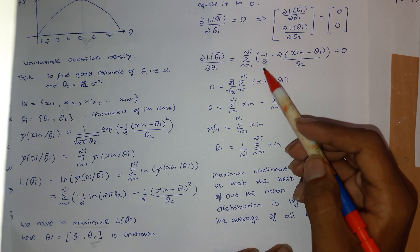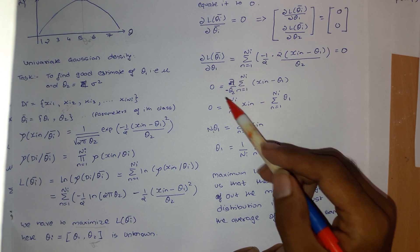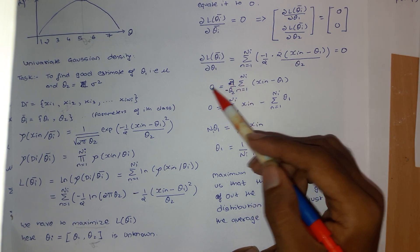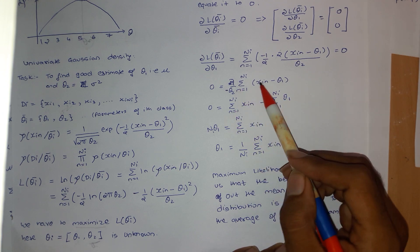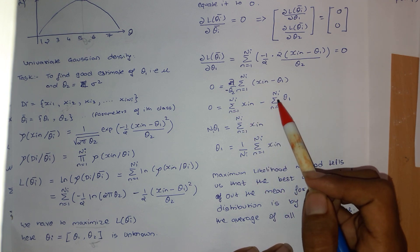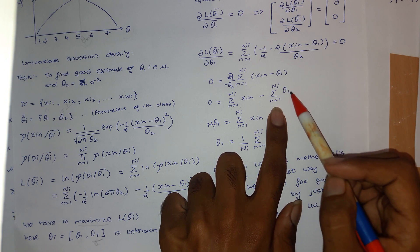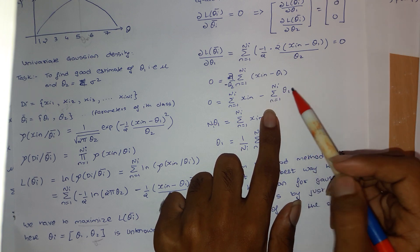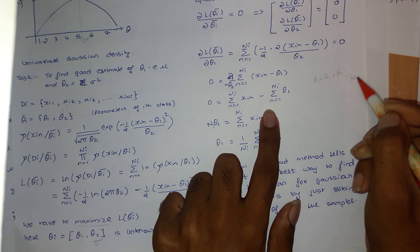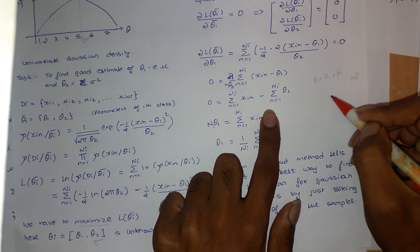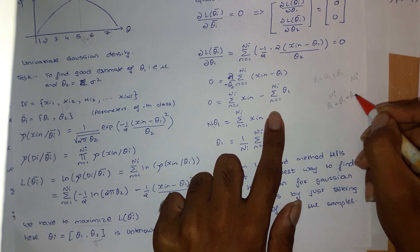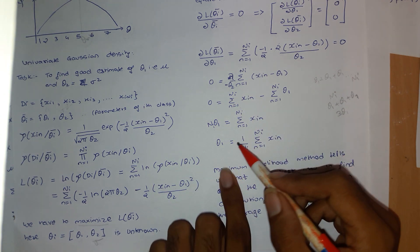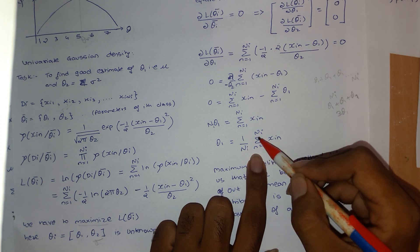Applying algebra: the factor of two cancels. Taking minus one over theta_2 outside the summation (since it does not depend on n) and equating to zero means the summation term must be zero. Splitting the summation linearly, and noting theta_1 does not depend on n, the sum of theta_1 over n_i terms equals n_i times theta_1. Solving gives theta_1 = (1/n_i) times the sum of x_in from n=1 to n_i.